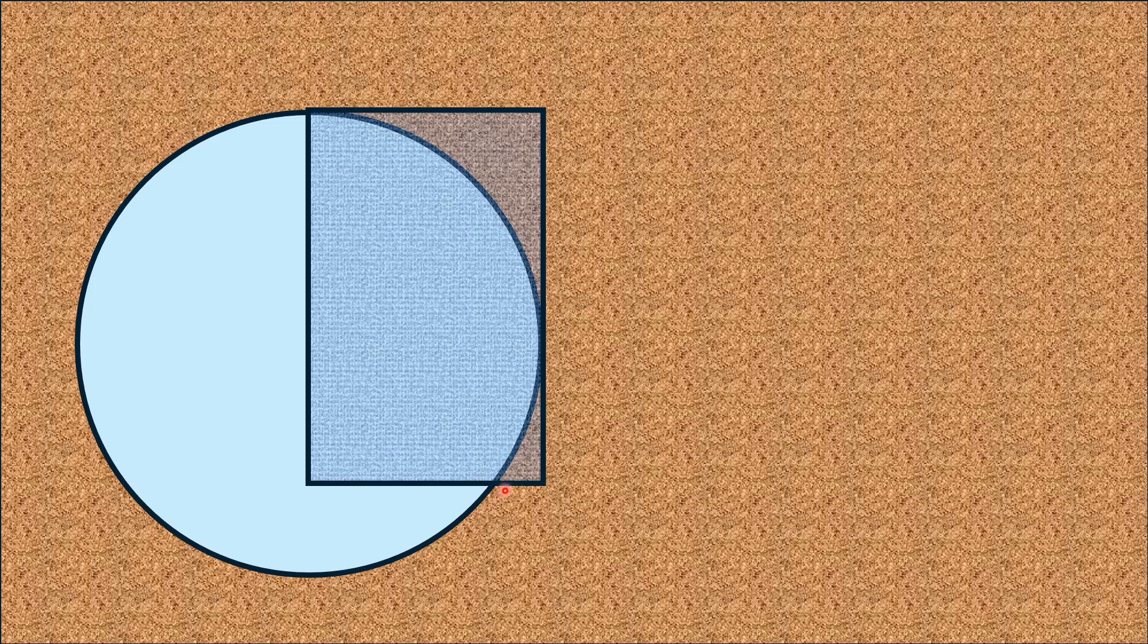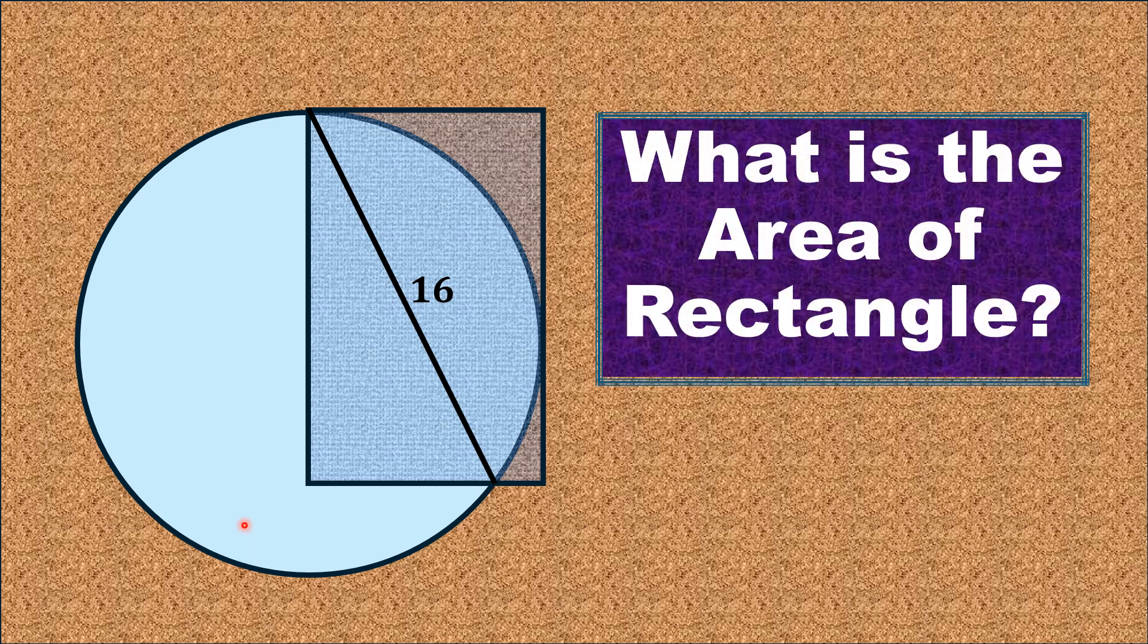If we join this tangency point to this intersection point and this length is given as 16 units, then by this limited data we have to find the area of this rectangle.